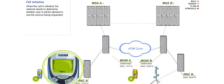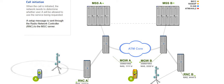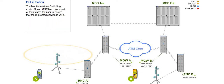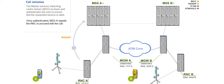When the call is initiated, the network needs to determine where user A will be allowed to use the service being requested. A setup message is sent through the radio network controller, or RNC, to the MSC server. The mobile services switching center server, also called the MSS, receives and authenticates the user to ensure that the requested service is valid. Once authenticated, MSSA signals the RNC to proceed with the call.